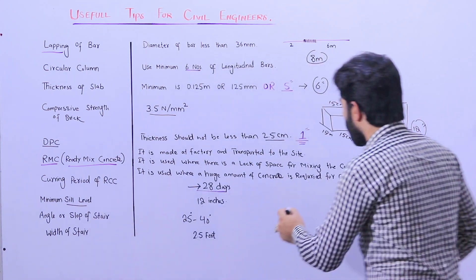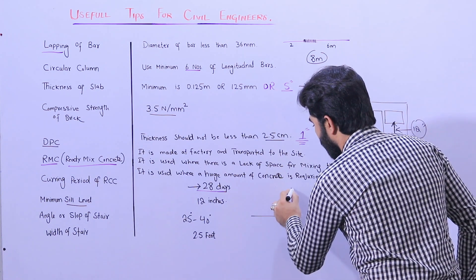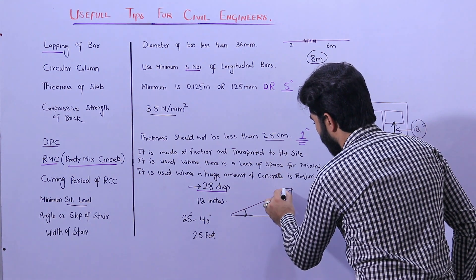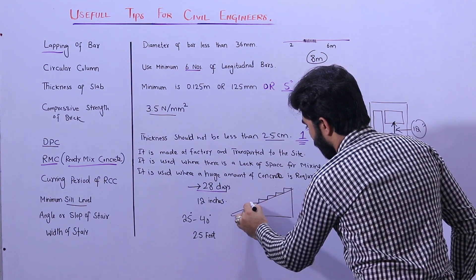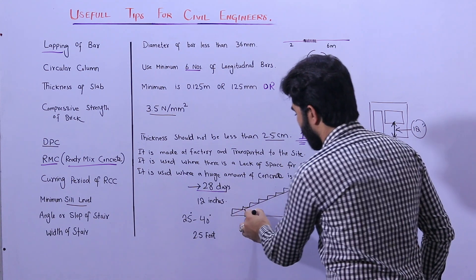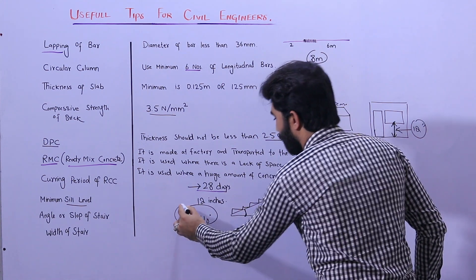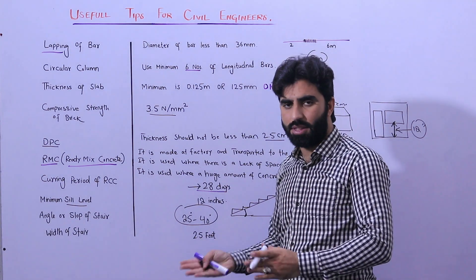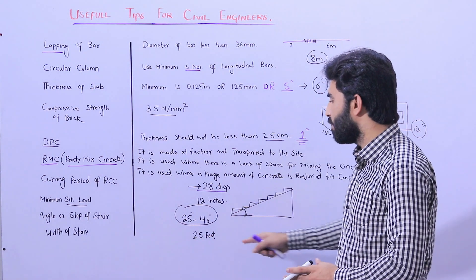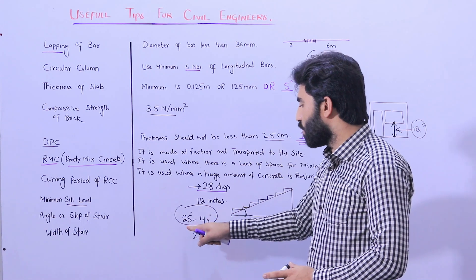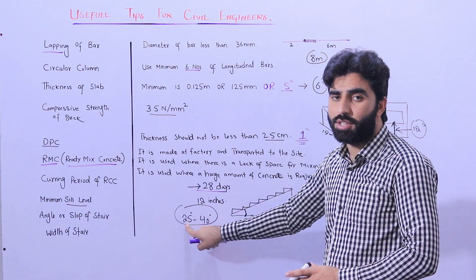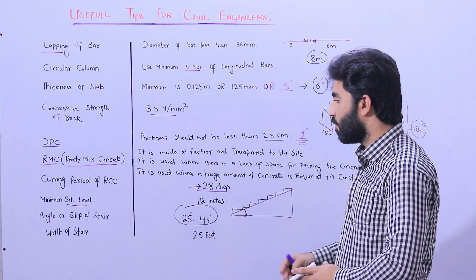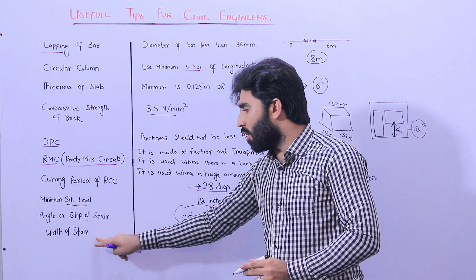The next tip is the angle or slope of stairs. You can see the staircase here — the angle or slope of the stair should normally be between 25 and 40 degrees. It depends on the site, the length, and the height of the stair. I recommend keeping it between 25 and 33 degrees for the best comfort in normal use.